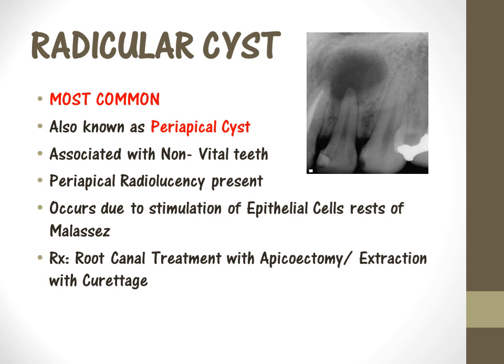These cells are called epithelial cell rests of Malassez. These cells react with the infection and ultimately lead to the formation of periapical cysts. The treatment for this periapical cyst would be: option one, root canal treatment can be done followed by apicoectomy, or extraction can be done followed by curettage.